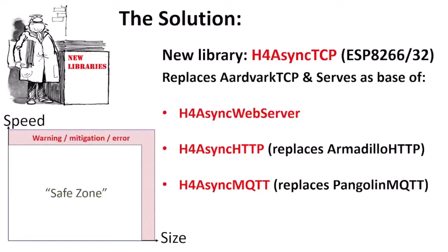The solution is a complete ground-up rewrite of a library I'm calling H4AsyncTCP, which replaces the existing Aardvark TCP in the H4 Menagerie and talks directly to LWIP. It uses the same code base for ESP 8266 and ESP32, so barring a few hardware abstractions, if it works on one it'll work on the other. That serves as the basis for a new H4 Async Web Server, replacing ESP Async Web Server, plus major updates to Async HTTP replacing Armadillo HTTP, and a new version of Pangolin — renamed Async MQTT — replacing Pangolin.